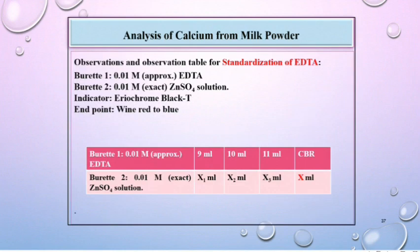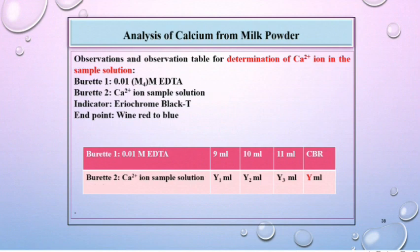Observations and observation table for standardization of EDTA: Burette 1 contains 0.01 molar EDTA; Burette 2 contains 0.01 molar zinc sulfate solution; indicator is eriochrome black T; endpoint is wine red to blue; record the reading as X ml. Observation table for determination of Ca²⁺ ion in the sample solution: Burette 1 contains 0.01 molar EDTA solution; Burette 2 contains the Ca²⁺ ion sample solution; indicator is eriochrome black T; endpoint is wine red to blue; record the reading as Y ml.